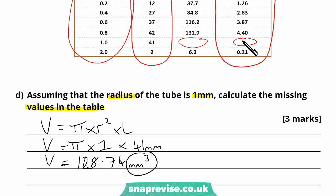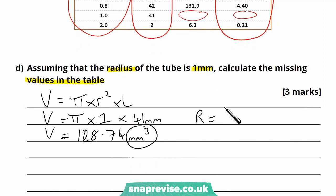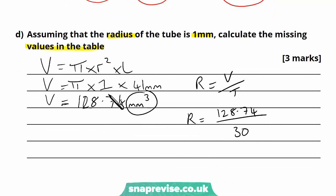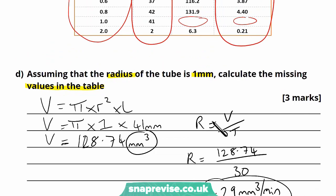The next missing value is the rate of photosynthesis. The rate equals volume produced divided by the time taken to produce it. So the rate is 128.74 divided by 30 minutes, giving 4.29 mm³ per minute. Remember, if you calculated the volume incorrectly but still used this equation appropriately with your number, you can still get marks — you might get two out of three rather than all marks. Also, if they gave the time in hours, you'd need to convert to minutes or vice versa.